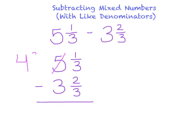I'm going to call that 3/3. We need to remember that when the numerator and the denominator are the same, it's exactly the same as 1 whole. So 4 and 3/3 is exactly the same as 4 and 1, which makes 5.